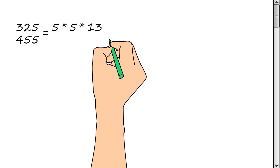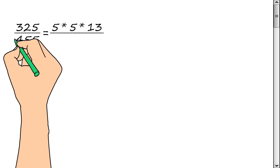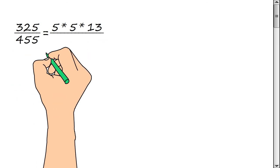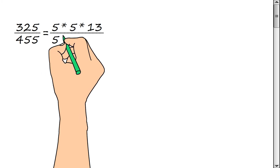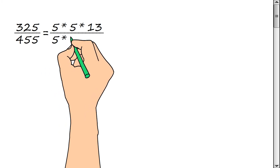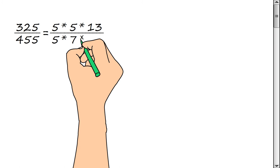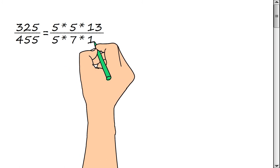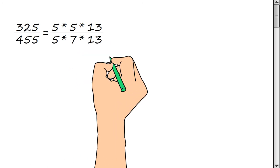Now we represent the denominator of the fraction as a product of prime factors: 5, multiply by 7, multiply by 13.